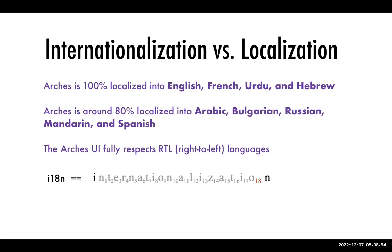Another achievement with ARCHES v7 is that the user interface fully respects right-to-left languages. There are several languages read right to left, and if the UI wasn't updated, presenting those strings in a left-to-right layout could be confusing. We've gone to the effort of making sure the UI respects right-to-left languages and is presented in the appropriate right-to-left manner.